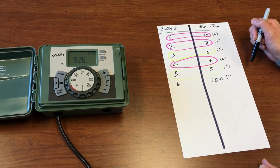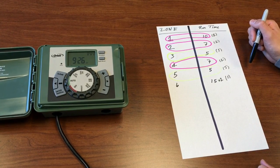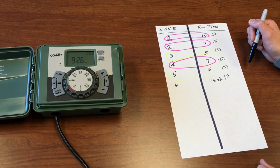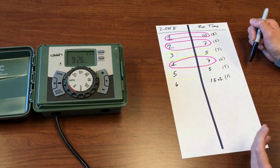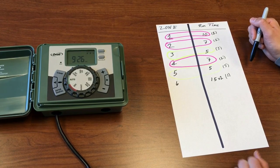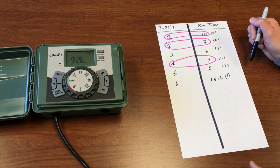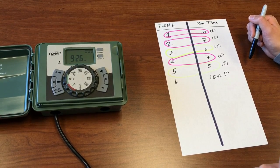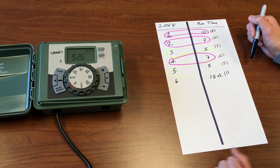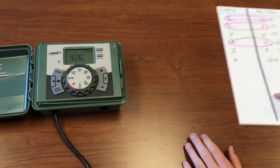Each program can accommodate up to four start times and then each start time has a run time from anywhere from zero minutes to 240 minutes which equates to four hours. And then you need to tell it how often it needs to run.